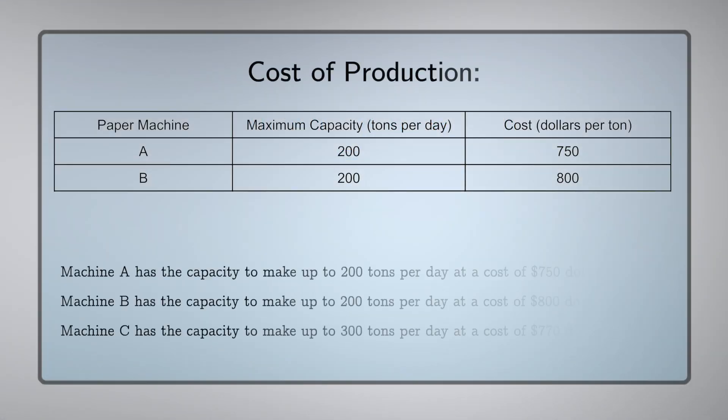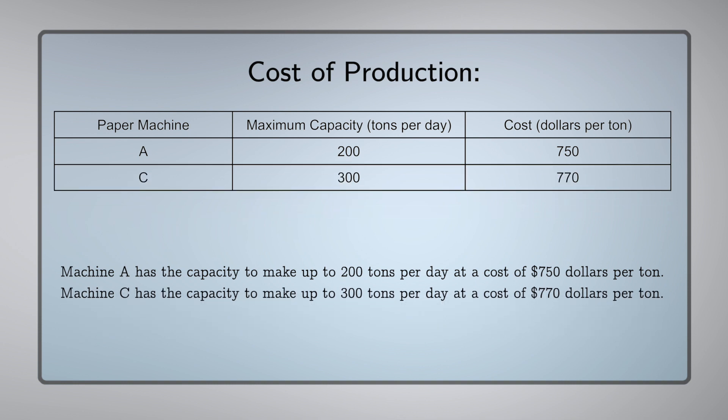After trying different combinations, it looks like we should use Machine A and Machine C at their maximum capacities. This should give us the lowest production cost for the toilet paper. Don't forget that this 500 tons of paper now needs to convert into smaller rolls that the customer has ordered. That's right — our three converting lines. So we've got to figure out the combination of converting lines that will give us exactly 500 tons of paper at the lowest cost of production.